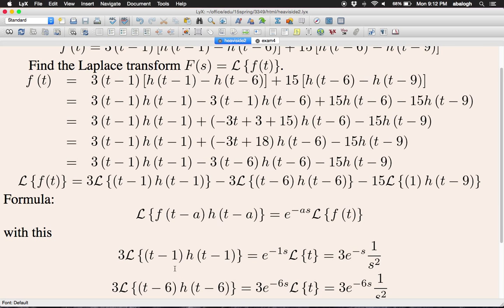According to the formula, we will have e to the minus 1s, and then we have to calculate the Laplace transform of t instead of t minus 1. It's basically supposed to be the formula without the shift part. You're supposed to cancel this minus 1 part and then take the Laplace transform of whatever is left there.